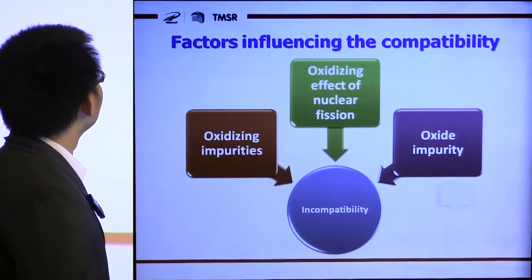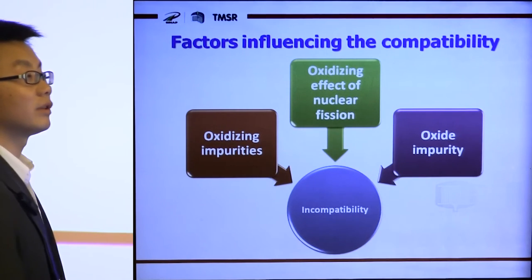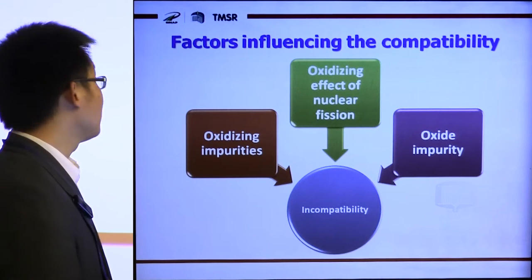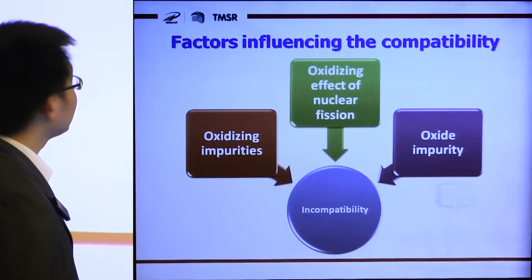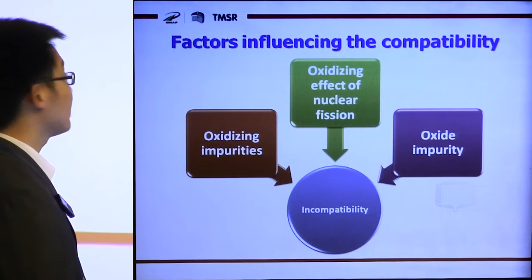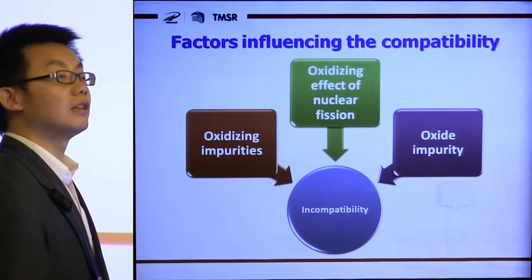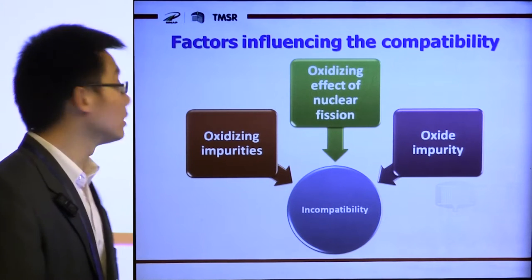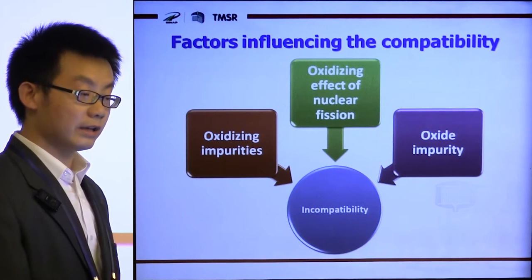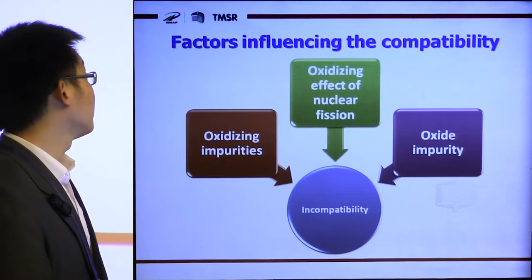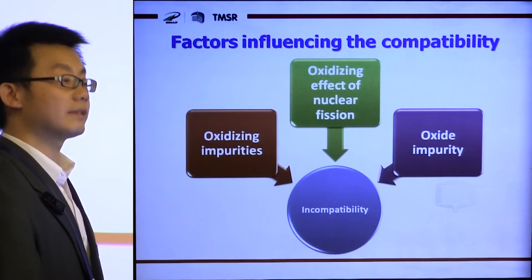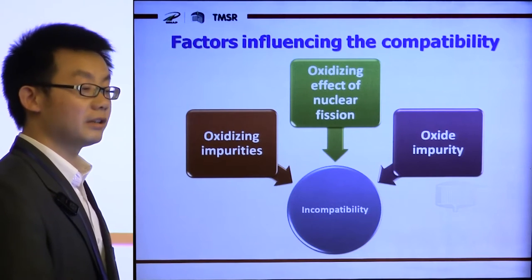The harmonious contact between the molten salts and the structural materials is crucial for the whole molten salt reactor system. However, the compatibility between the molten salts and the alloy materials may be affected by three factors: oxidizing impurities in the molten salts, the oxidizing effect of nuclear fission, and oxide impurities which may also cause incompatibility problems.